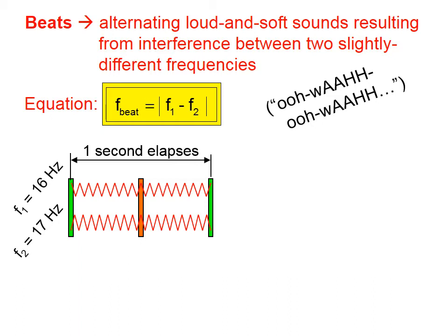But look at this orange region. What we're getting in the green regions is destructive interference. And what we're getting in the orange region is constructive interference.